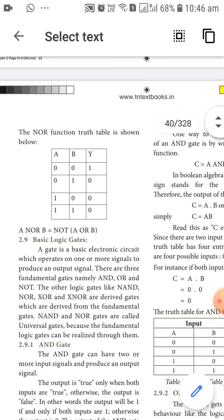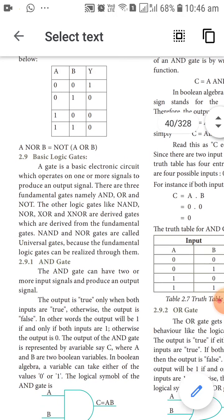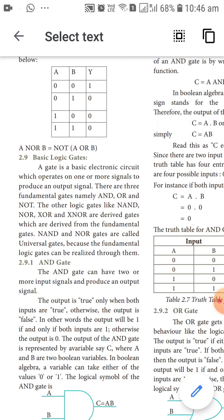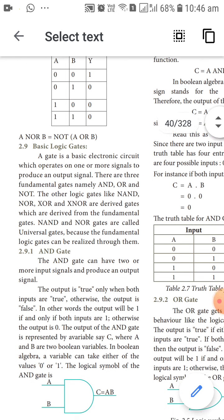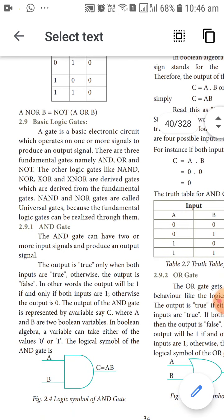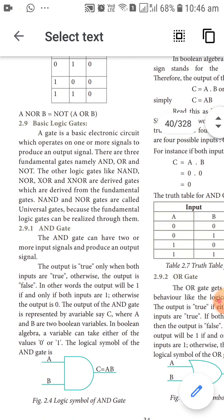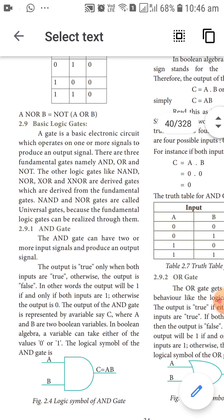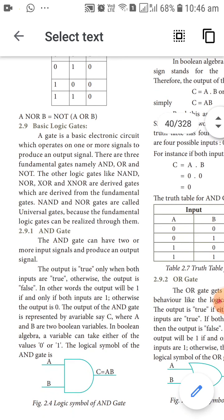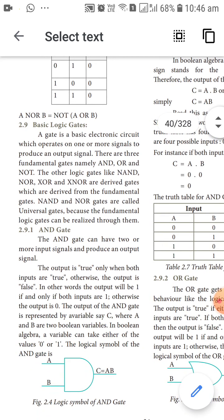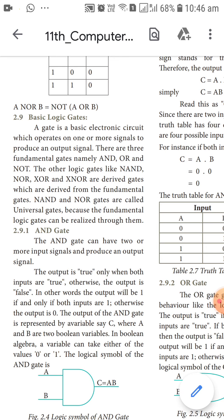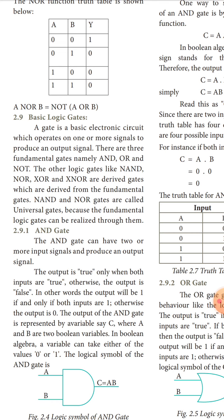Now, what are the basic logic gates and how do they work inside a computer circuit? A gate is a basic electronic circuit which operates on one or more input signals to produce an output. The inputs can be 0-0, 0-1, 1-0, or 1-1, and we get corresponding output values. There are three fundamental gates: AND, OR, and NOT. The other gates — NAND, NOR, XOR, and XNOR — are additional logic gates.